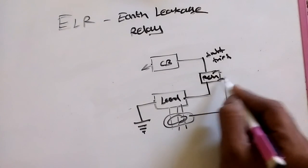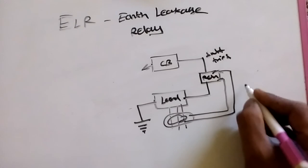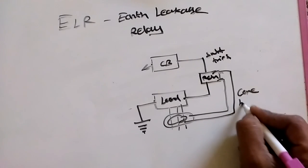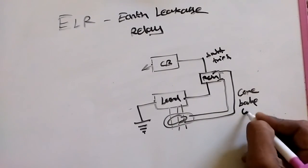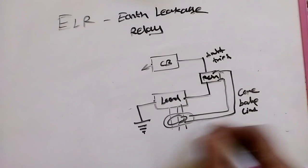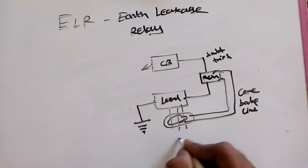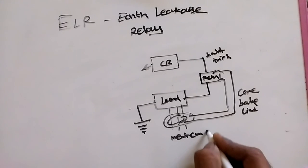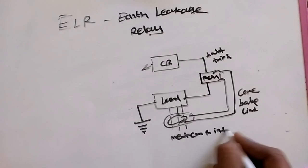CBCT means core balance current transformer. The core balance current transformer measures the current flow from input to load.